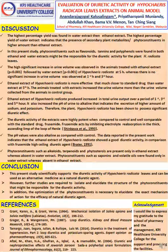A highly significant increase in urine volume was observed in the animals treated with ethanol extract, followed by water extract, at five hours, whereas no significant increase in urine volume was observed at the first hour and third hour. The ethanol extract of Hypochaeris radicata is much closer to the standard drug than the water extract at the fifth hour. The animals treated with the extract showed increased urine volume compared to the control group, and the diuretic activity of the extract was highly potent when compared to control and well compared with the standard drug furosemide.